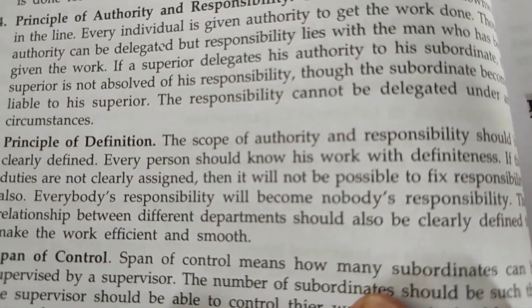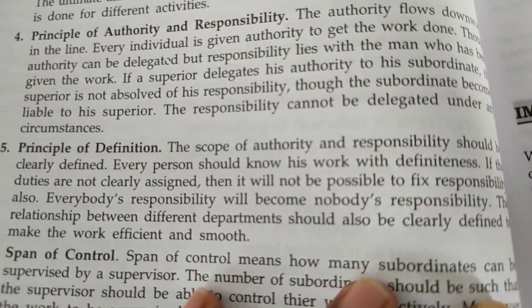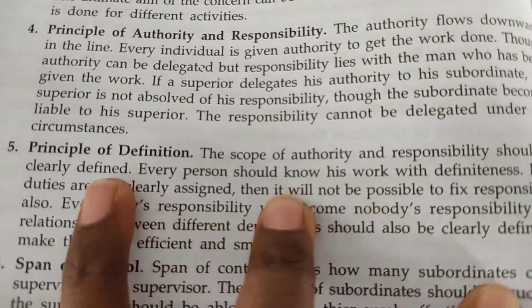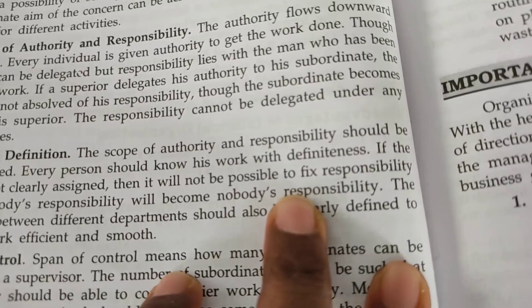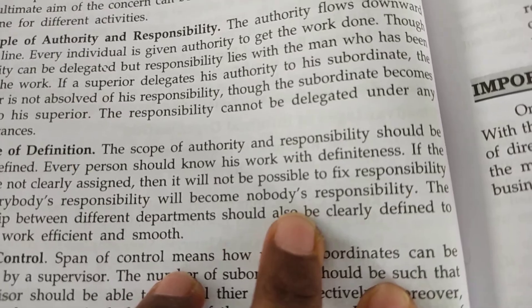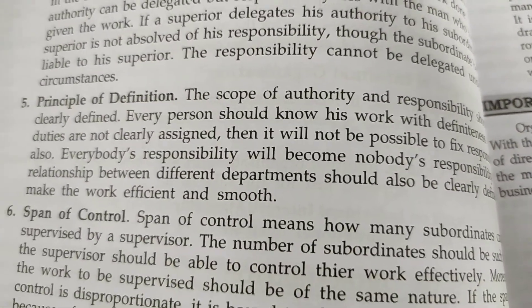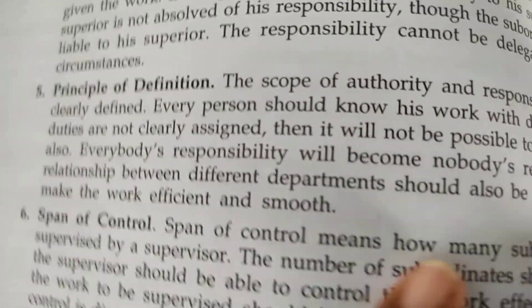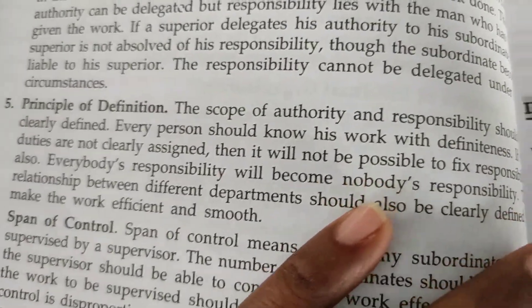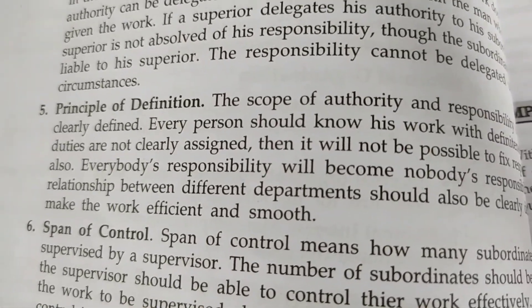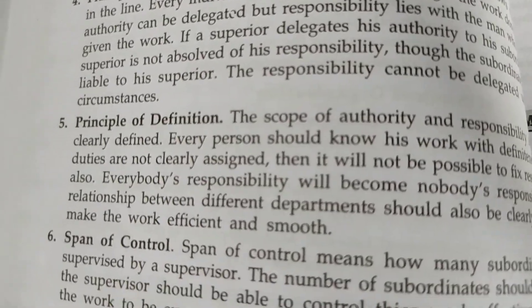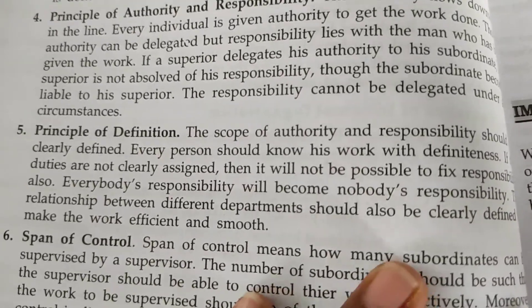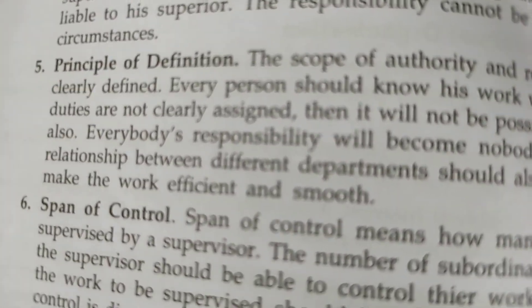Next is the principle of definition. The scope of authority and responsibility should be clearly defined. Every person should know his work with definiteness. If duties are not clearly assigned, it will not be possible to fix responsibility, and everybody's responsibility will become nobody's responsibility. In an organization, it must be clearly mentioned what work each person has to do. If not correctly mentioned, they won't know their work or their responsibility. The responsibility and authority should be clearly mentioned so the running of the organization will be very smooth.